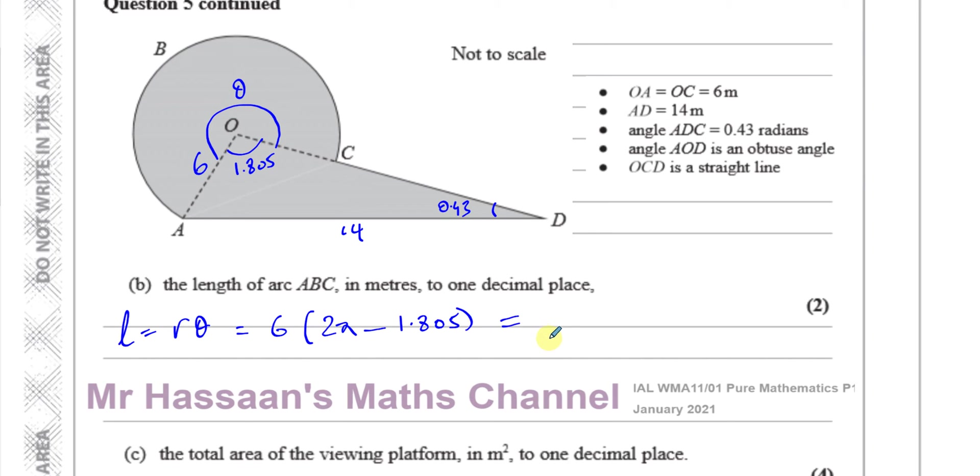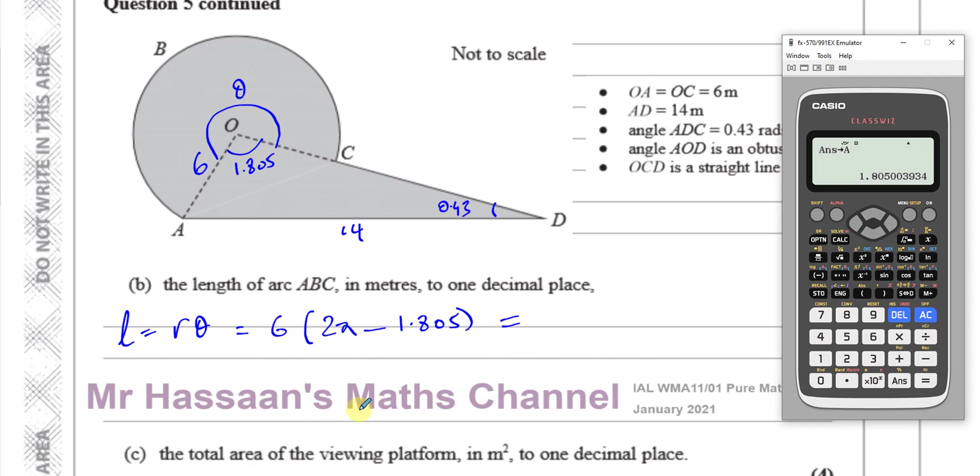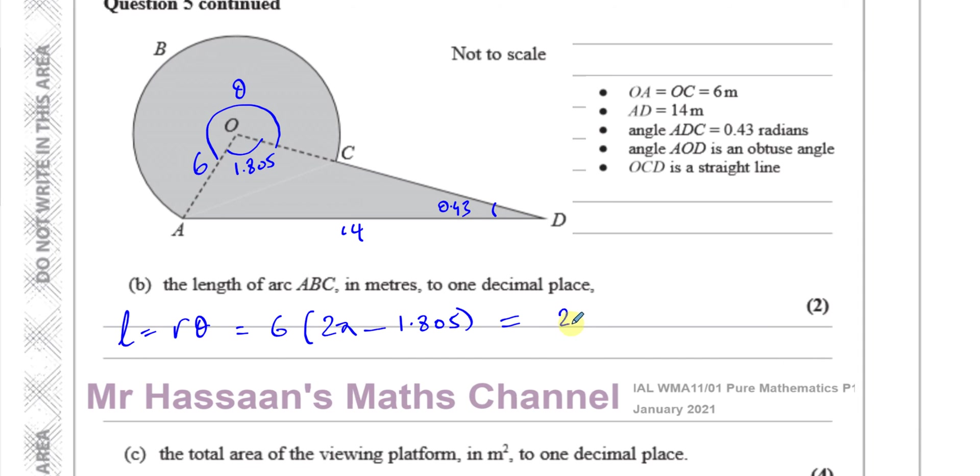And that will give us the length of our arc. So we're going to have 6 times 2 pi minus what I had stored again now for A which was that last answer, which gives us 26.869, which is 26.9 meters. So there we have the answer for part B.